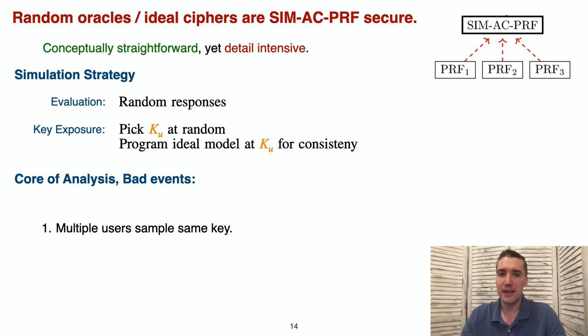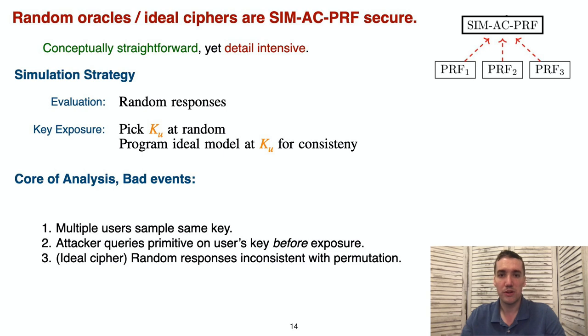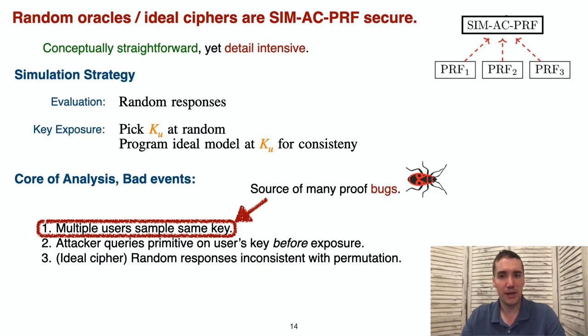The core of analyzing this simulation strategy consists of bounding the probability of some bad events. The first of these is that the same key happens to be sampled by multiple different users. The second is that the attacker is somehow able to query the ideal primitive using a user's key before that key is exposed. And the third, which is only applicable for ideal ciphers, is if the random responses that we return by evaluation are inconsistent with the ideal cipher being a permutation. Missing the first of these bad events was the source of many of these proof bugs that we discussed earlier that arose in prior papers.